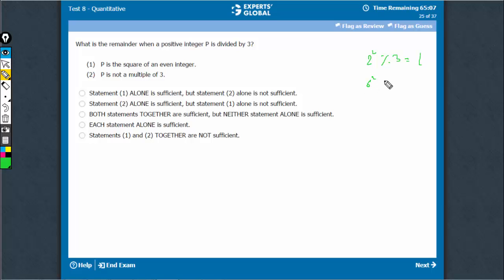If it is 6 squared, of course, the remainder would be 0. If the even number happens to be a multiple of 3, then the remainder is always going to be 0. There are multiple answers possible. So, statement 1 is not sufficient.